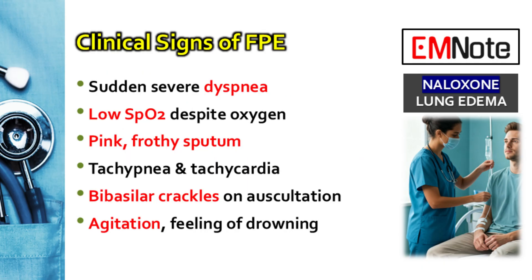That brings us to the clinical presentation. The most important thing to watch for is a patient who seems to be getting better right after you give naloxone, and then all of a sudden they take a nosedive. The signs are pretty dramatic: a sudden, severe shortness of breath; their SpO2 — blood oxygen saturation — will plummet. A classic sign is pink, frothy sputum. They'll also have tachypnea and tachycardia. You'll probably hear bibasilar crackles or rales on auscultation. And the patient will likely be very agitated and anxious.